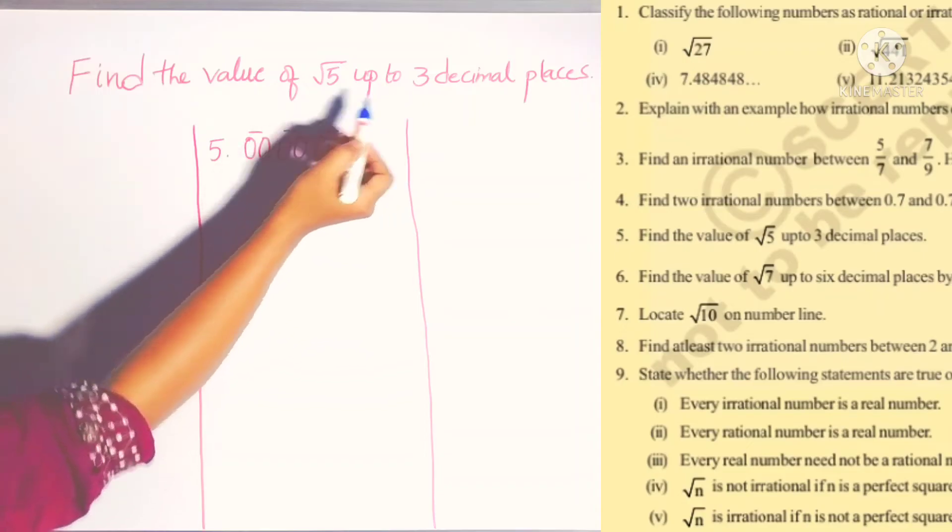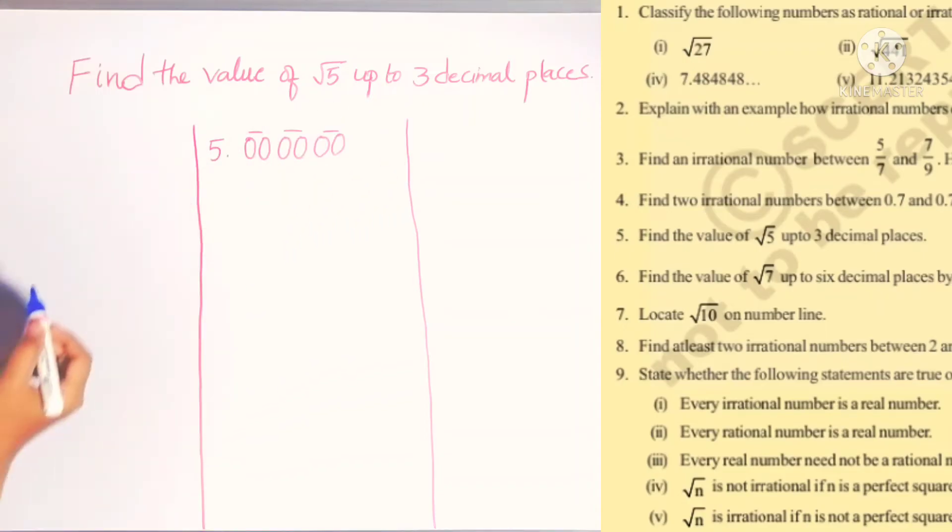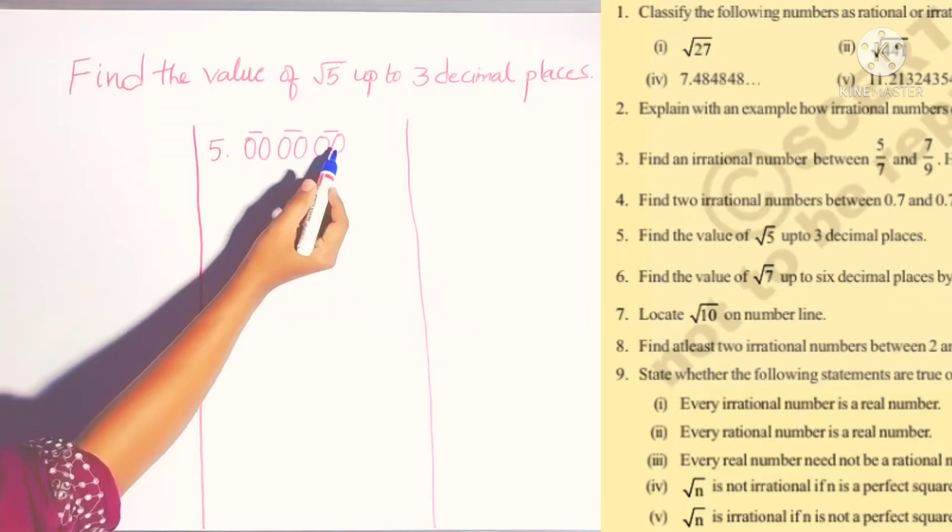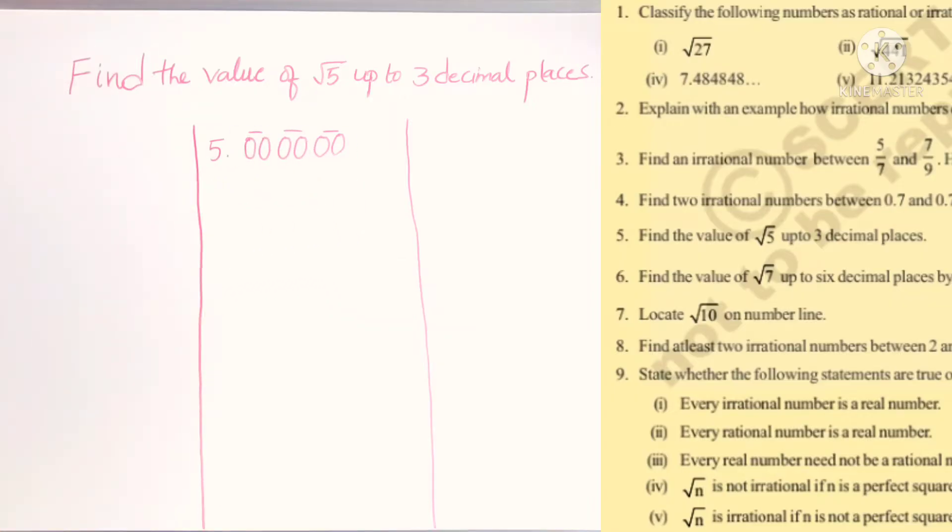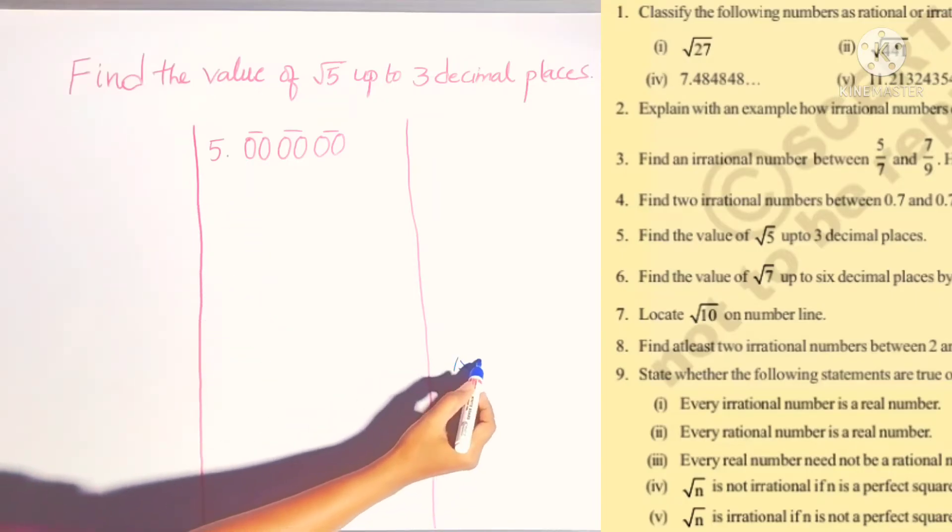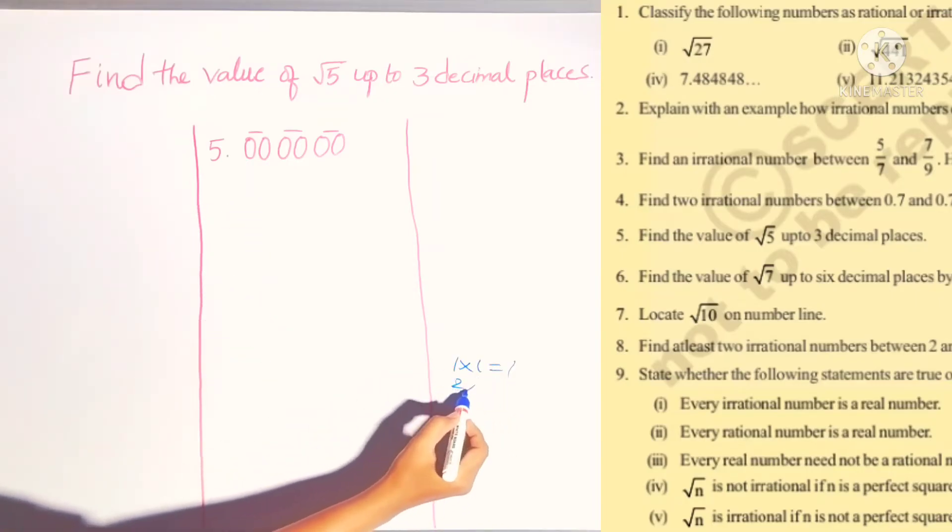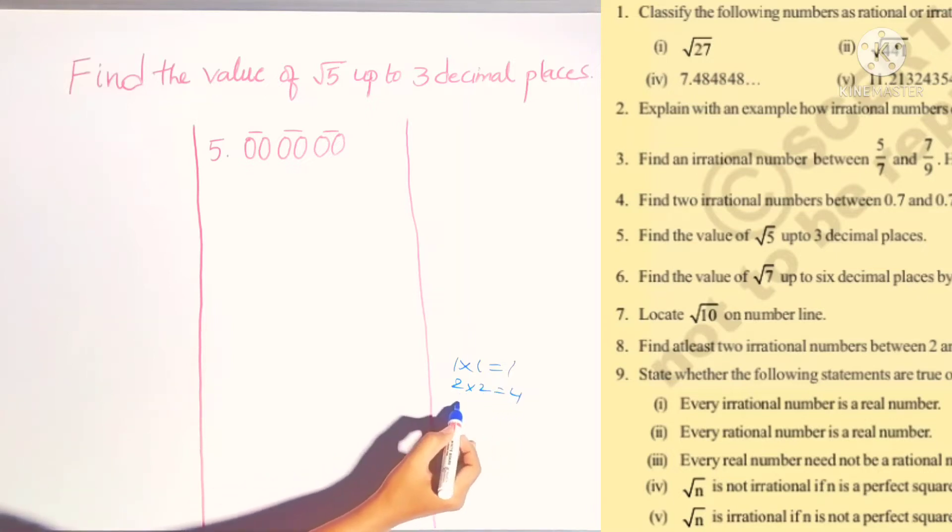As I said earlier, they asked up to 3 decimals, so I wrote three pairs of zeros and put a bar on them. To perform this division, we have to read the square table: 1 into 1, 2 into 2, 3 into 3, like this we have to check the table.